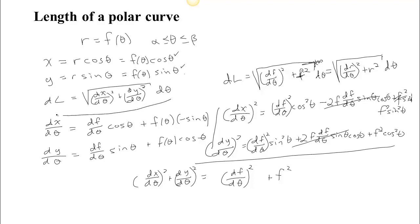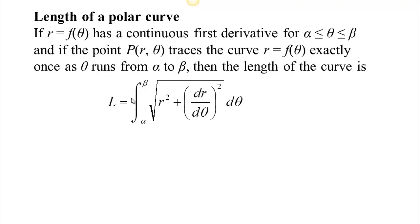Basically what we did is we took the formula for the length differential that applies to a parametric curve, and we said this polar curve gives a parametric curve. So we can take that length differential and figure out what it turns out to be in the special case of a parametrization from a polar curve. It came out to have this neat form: √((dr/dθ)² + r²) dθ. That's where the formula in the book comes from. You just integrate all those length elements from the starting angle alpha to the ending angle beta to get the total length.